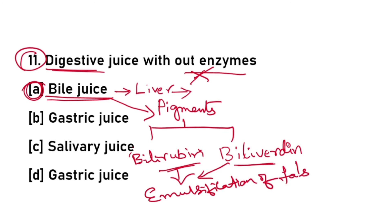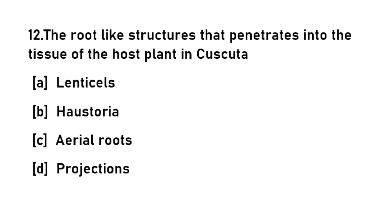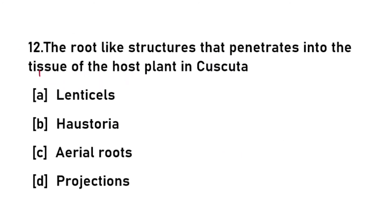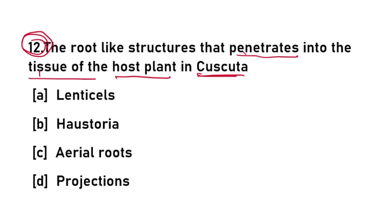Emulsification of fats means breaking down of complex fat molecules into simpler fatty acids. Twelfth question: the root-like structures in Cuscuta that penetrate into the tissue of the host plant to absorb water and nutrients are called haustoria.